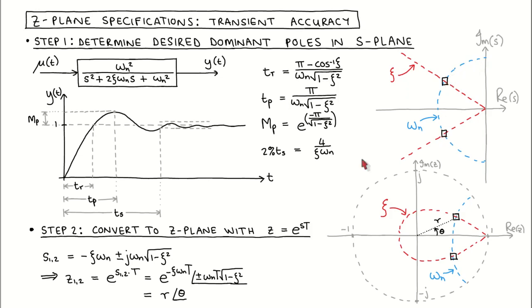Let's now look at the conversion of these desired dominant poles to the z-plane. We use the mapping z equal to e to the st, where t is the sampling period. The continuous time poles are written in terms of the damping and the natural frequency as shown here. When we put these poles through the mapping, we get a complex pole pair with magnitude e to the power minus zeta omega nt and angles plus or minus omega nt times the square root of 1 minus zeta squared.